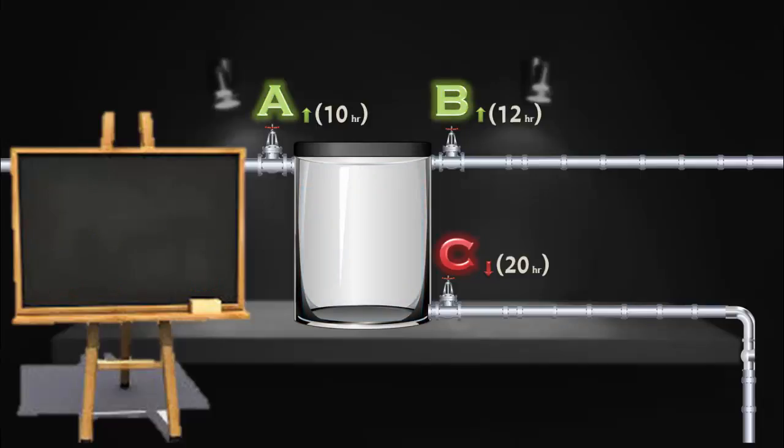Now, when all the three pipes are opened simultaneously, the part of the container filled by Pipe A plus Pipe B minus the part emptied by Pipe C in 1 hour is 1 by 10 plus 1 by 12 minus 1 by 20.